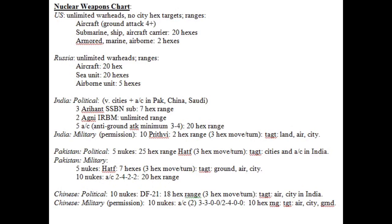For nuclear weapons rules: the Americans have unlimited nuclear warheads but may not do counter-value targeting — they cannot deliberately target civilians. Any aircraft with a ground attack value of four or higher can drop nuclear weapons. American aircraft have unlimited range. Submarines, ships, and aircraft carriers can each fire an unlimited number of nuclear weapons at 20 hexes. Armored, Marine, and Airborne units can fire within two hexes — those are tactical nuclear weapons.